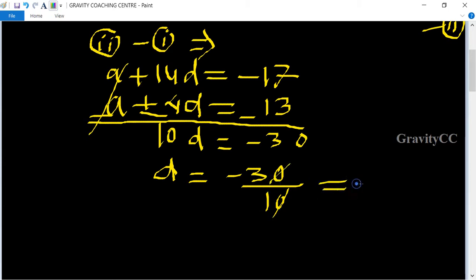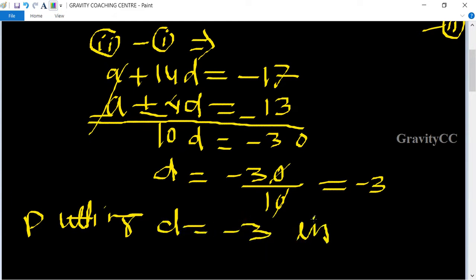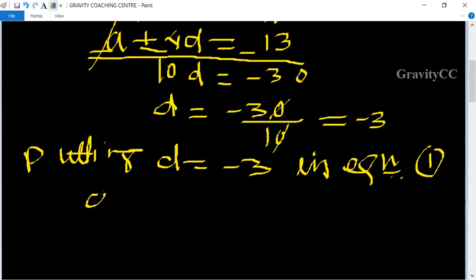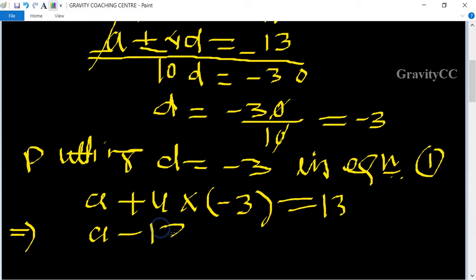Putting d = -3 in equation 1, we get a + 4 × (-3) = 13, which implies a - 12 = 13. So a = 13 + 12 = 25.